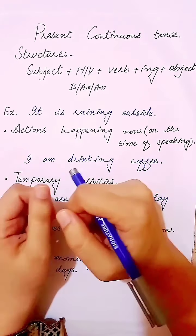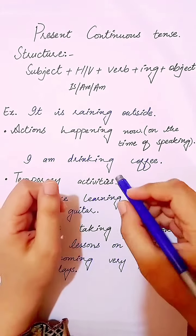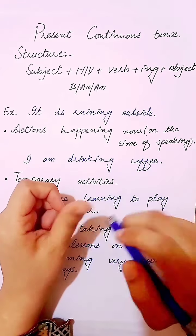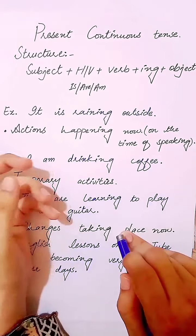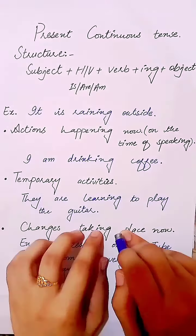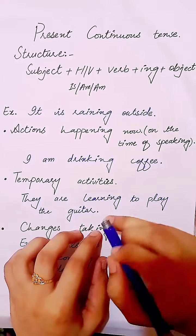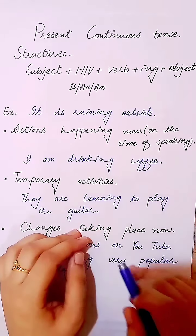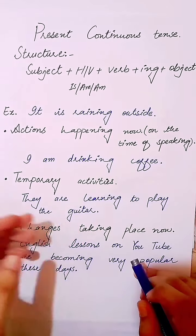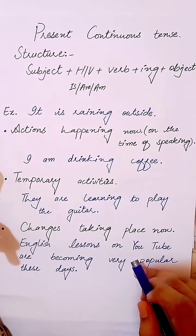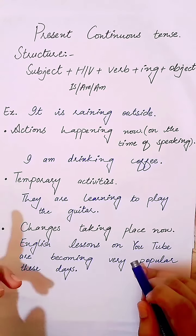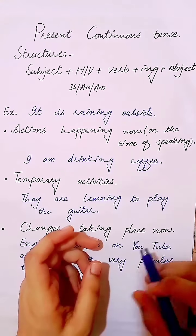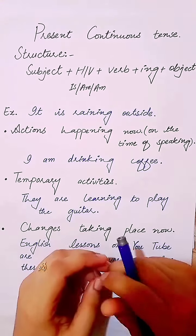Here is one example: 'It is raining outside.' The '-ing' form confirms the action is going on. The first use of present continuous tense is an action happening now at the time of speaking.